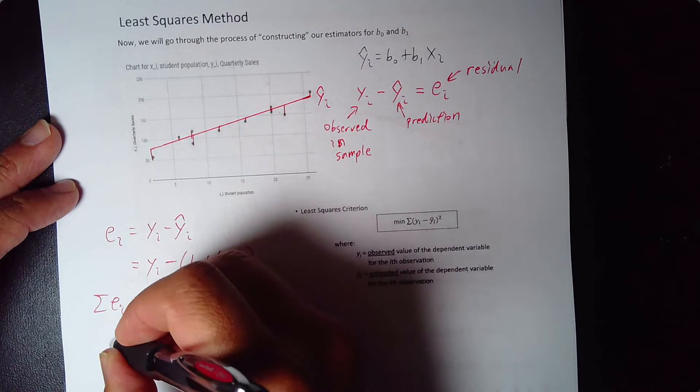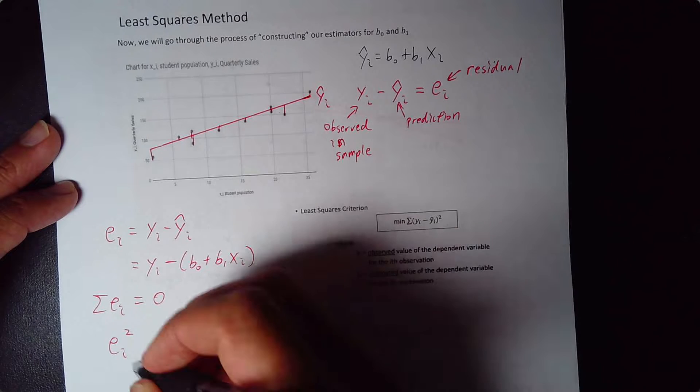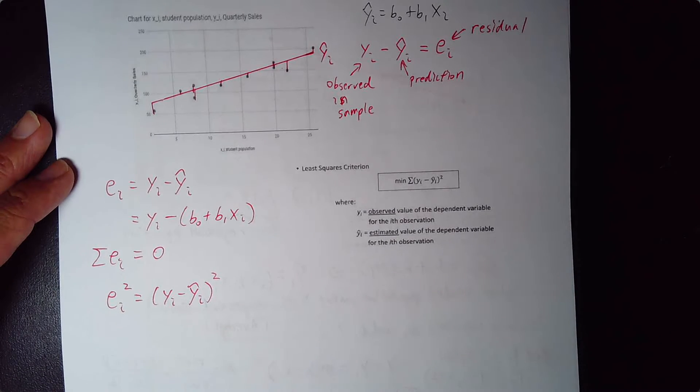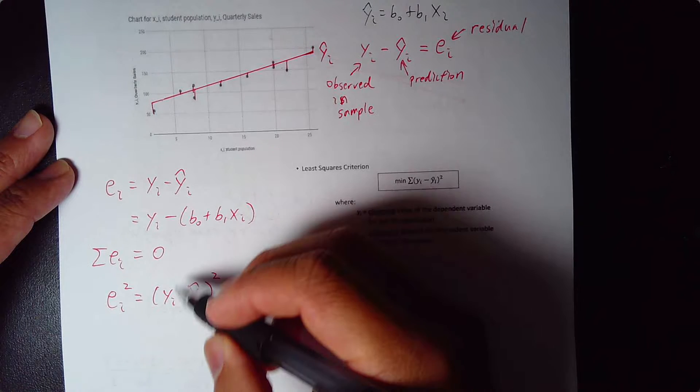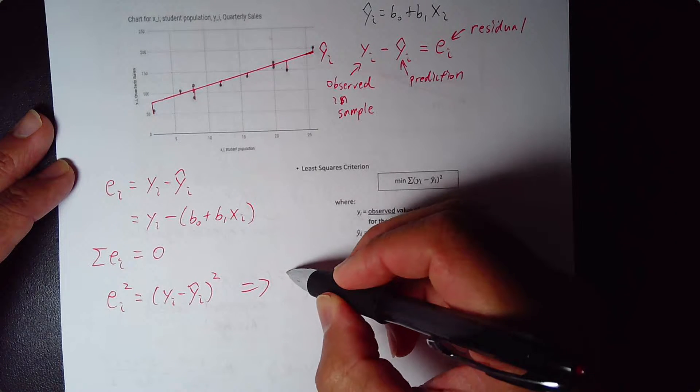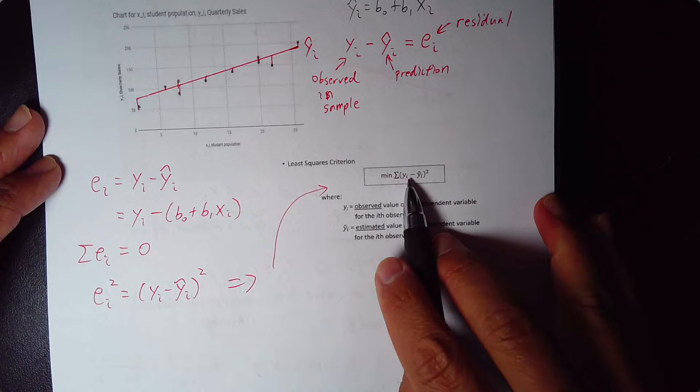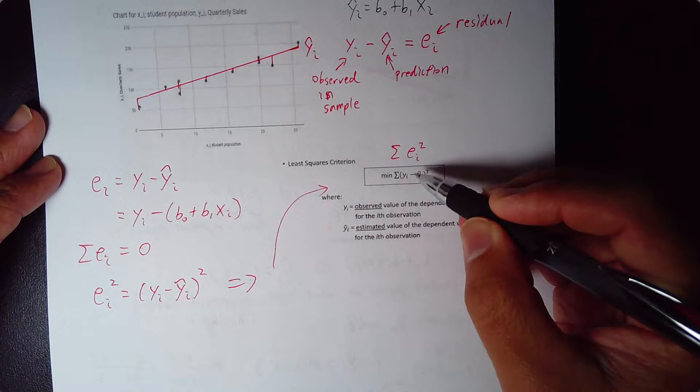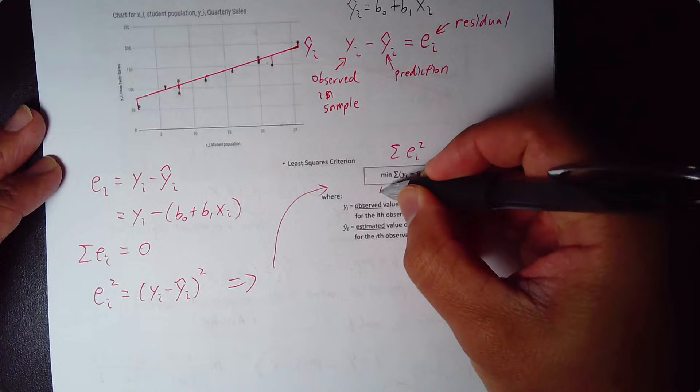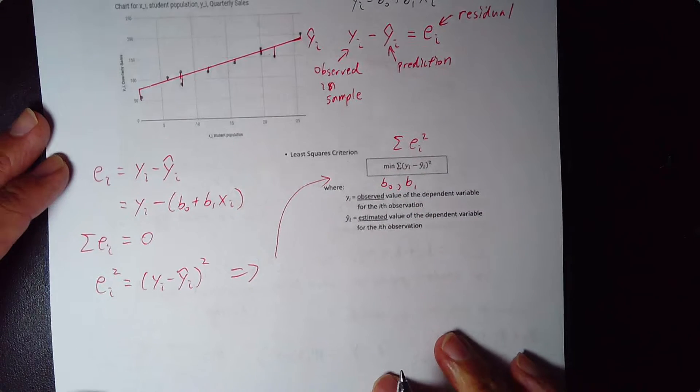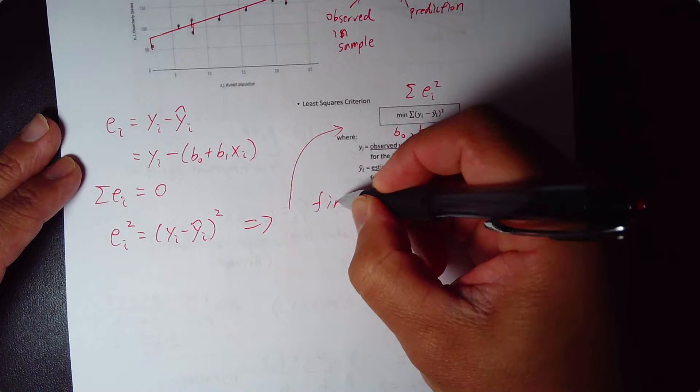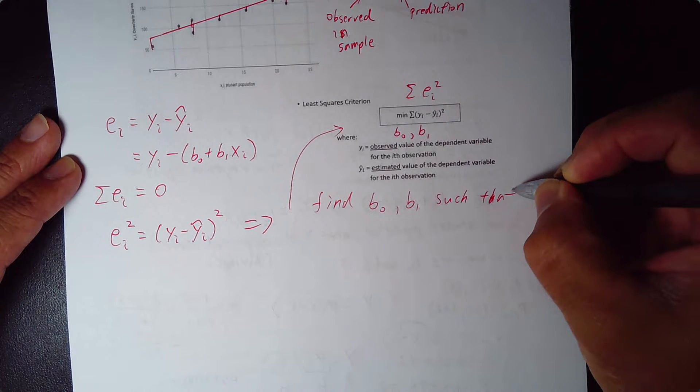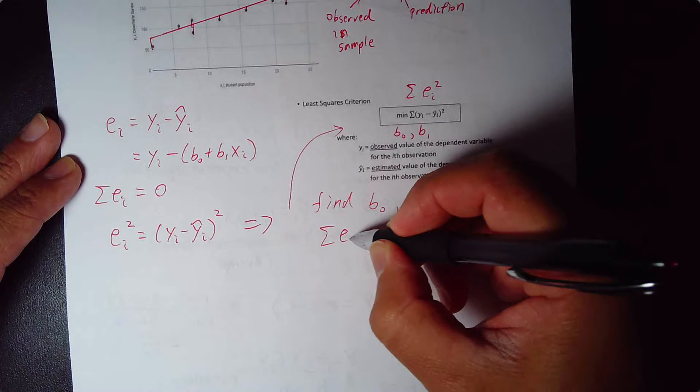So instead, I'm going to look at ei squared, which is yi minus y hat i all squared. And so my goal then, we have from this, I want to sum it up, and I get to my least square criteria, where we want to sum up all the ei squares, summation of the ei squares, and want to minimize it, and want to minimize it by choosing b0 and b1. So the goal is to find b0 and b1 such that summation of ei squared is minimized.